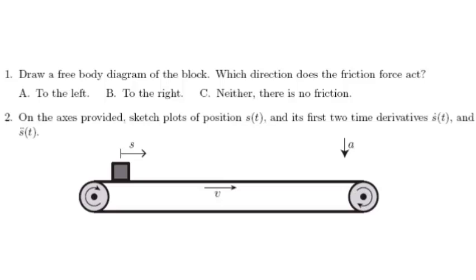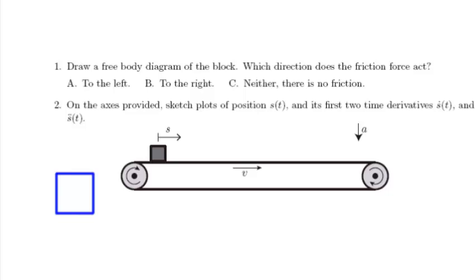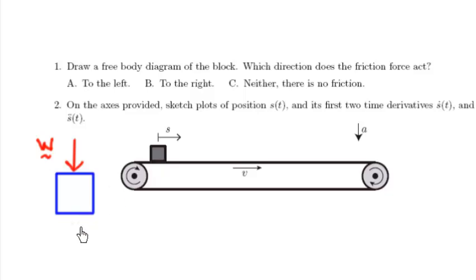The first thing we're asked to do is draw a free body diagram of the block. The free body diagram depicts all the forces acting on the body. I have weight acting downward — I like to label my forces, so there's weight indicated as a vector. I also have a normal force pushing up. The normal force is the force of the belt acting on the block, pushing the block upward so that it does not fall through. I'll label that normal force N.